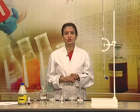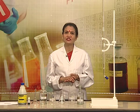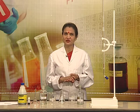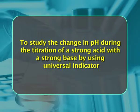We are well aware about the color change of indicators with acids and bases. So we use indicators to identify the end point in acid-base titrations. Now we start with the experiment, which aims to study the change in pH during the titration of a strong acid with a strong base by using universal indicator.